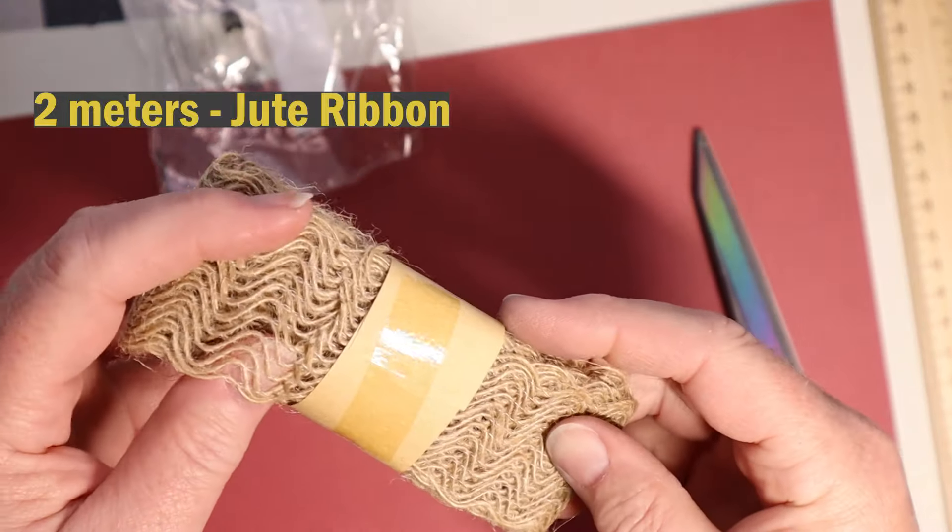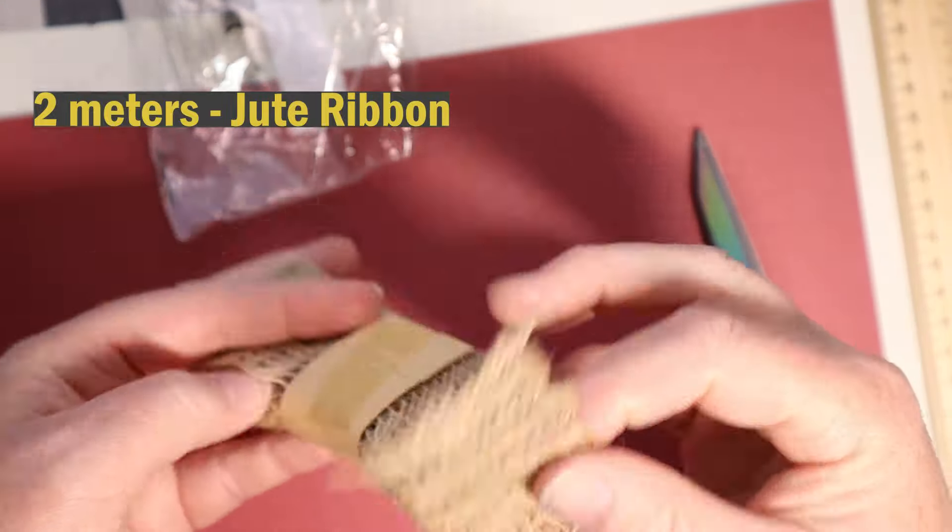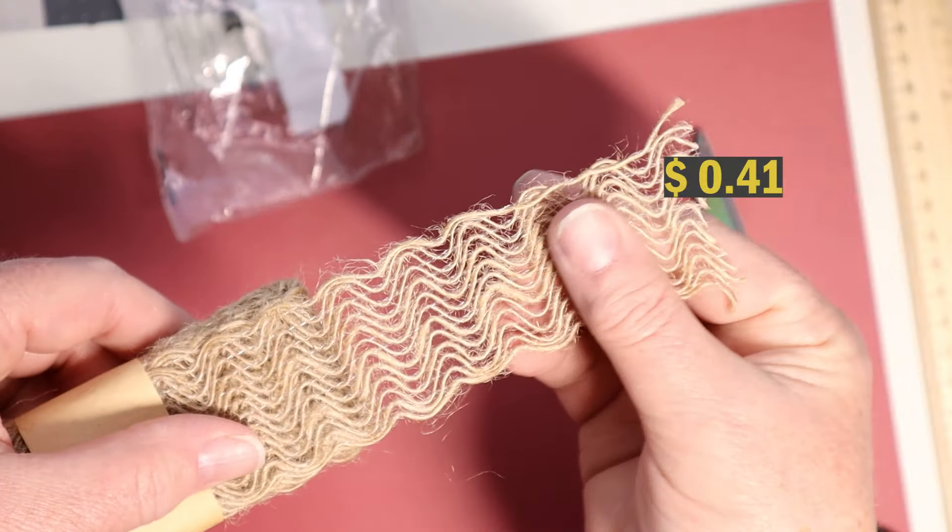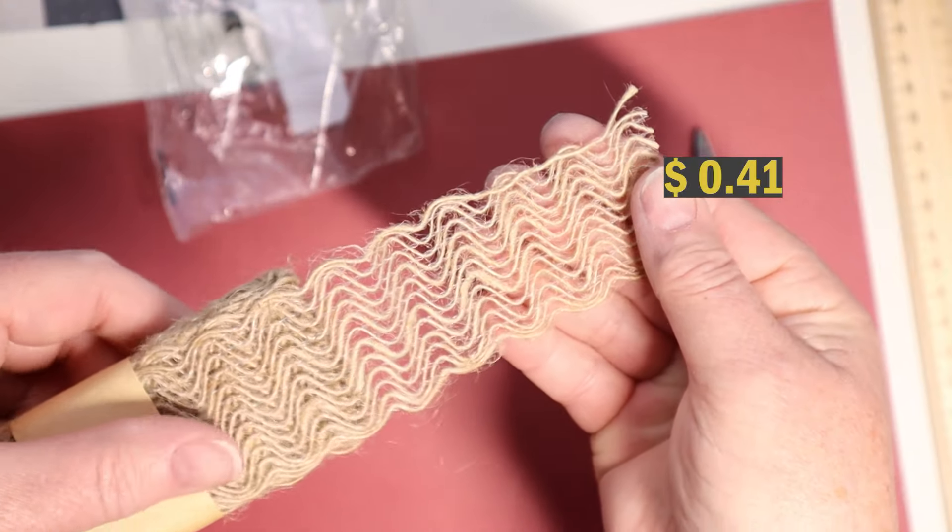Really pretty jute ribbon. I think this is one of those flash deals also. Very soft. I was really surprised only 41 cents for this. And I think that'll look really pretty also in some journals.